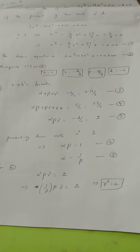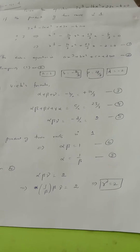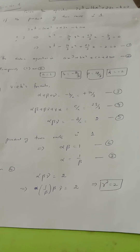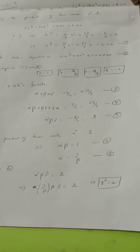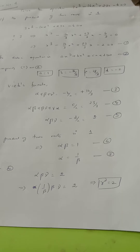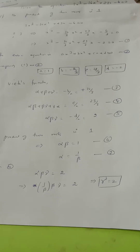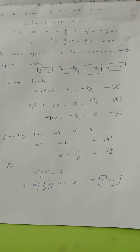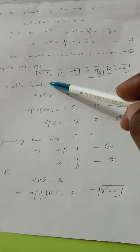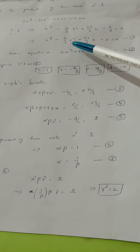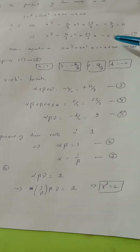Now identifying the coefficients: A is 1, B is 16/3, C is 23/3, and D is minus 2.